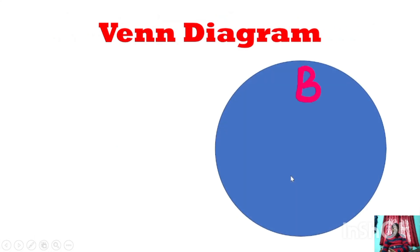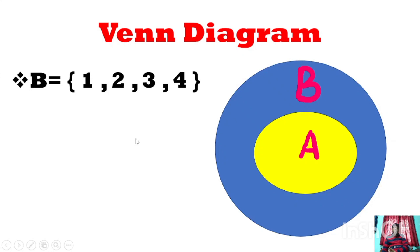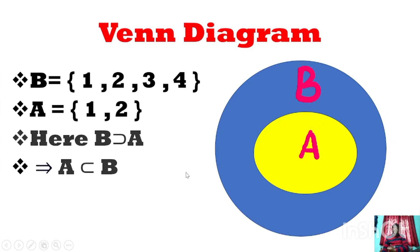Looking at the Venn diagram: here is set B, and inside set B is set A in yellow. Since all the elements of A are in B — for example, B = {1, 2, 3, 4} and A = {1, 2} — B is a superset of A and A is a subset of B. With the help of the Venn diagram, you can clearly understand the basic concept of set theory. The set A is a subset of set B from the Venn diagram.